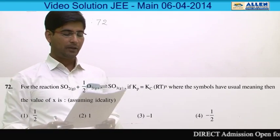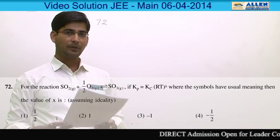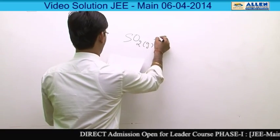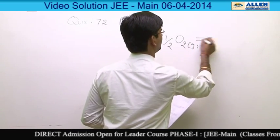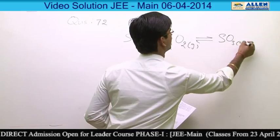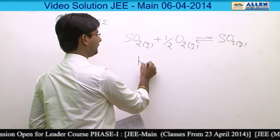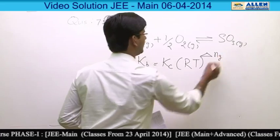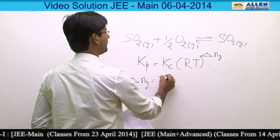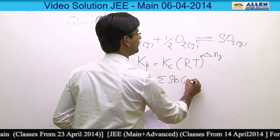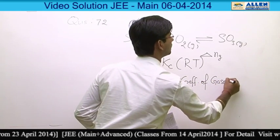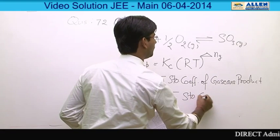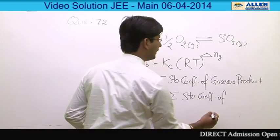In question number 72, they are asking for the relationship between Kp and Kc for the given reaction: SO2 plus half O2 gives SO3 gas. The relationship is Kp equals Kc into RT to the power delta Ng, where delta Ng stands for the summation of stoichiometric coefficients of gaseous products minus the summation of stoichiometric coefficients of gaseous reactants.